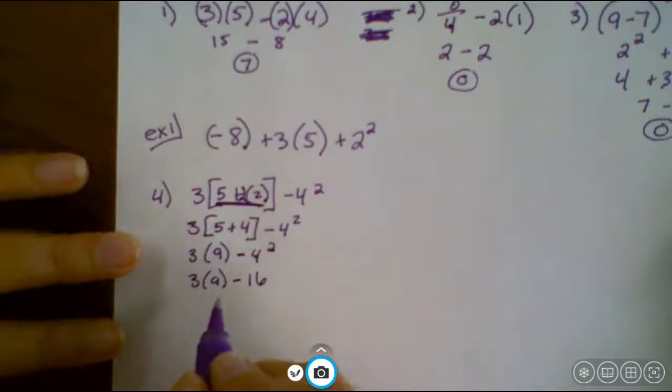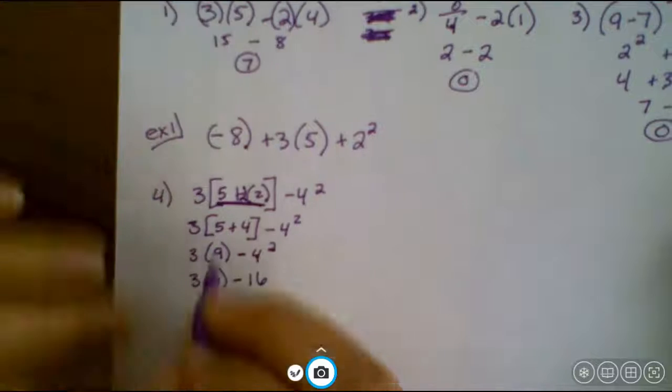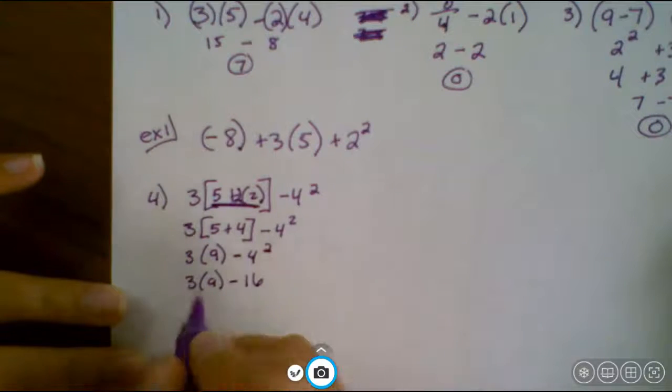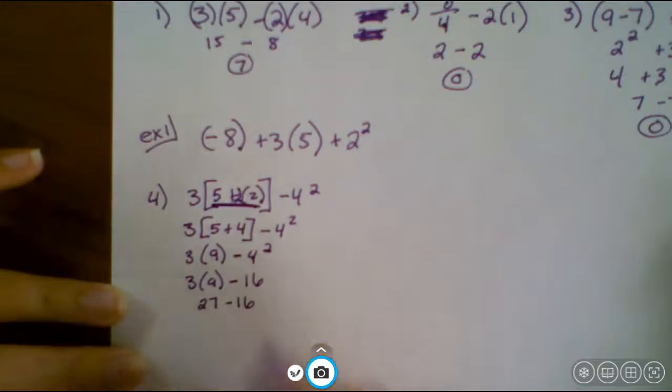All right, and now we have our next step, which is multiplication. Three times nine would be 27 minus 16. And now we're down to subtracting. So go ahead and subtract, and that leaves you with 11.